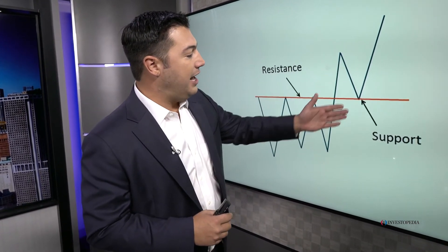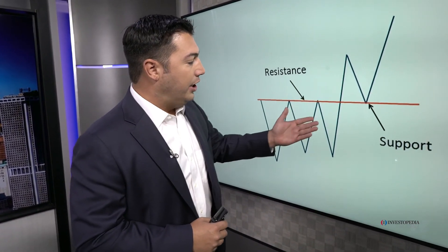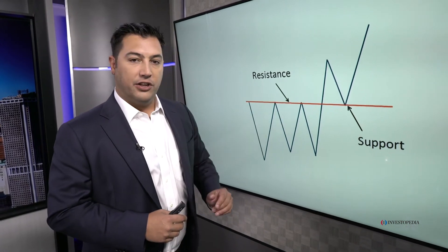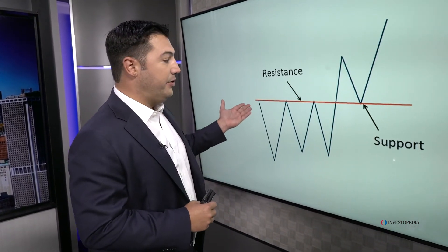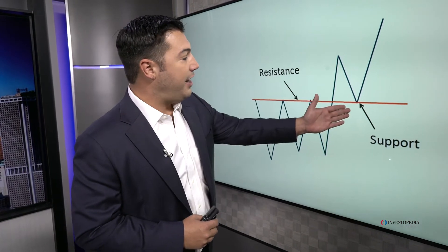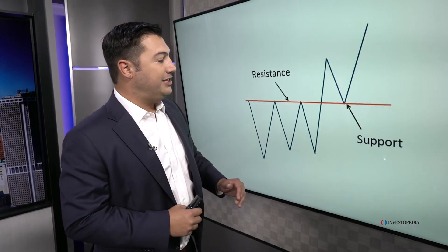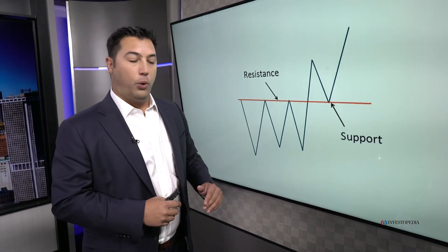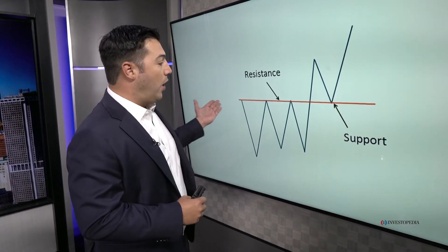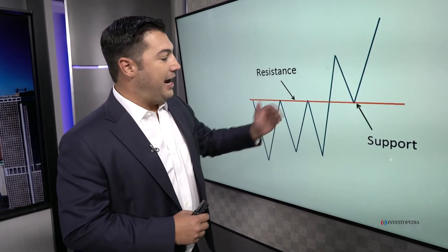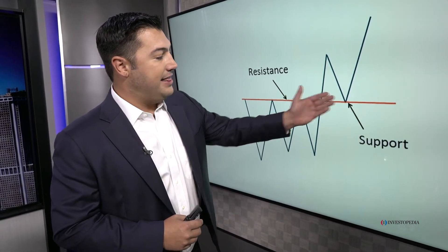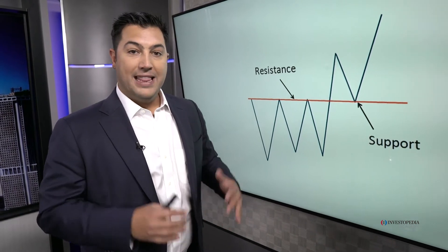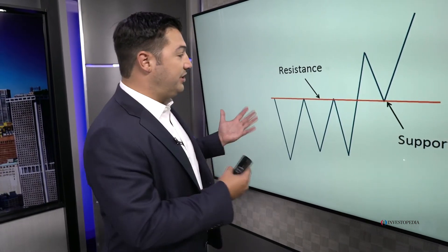When we return to that level, the market has already shown us that there are more buyers than sellers at that level, which is a change from previous experiences. So when we return to that former level of resistance, it turns into support — because where there were more sellers than buyers, that has now changed. There's more demand than supply, and that gets reiterated on the kickback. That's what we call polarity: resistance turning into support.